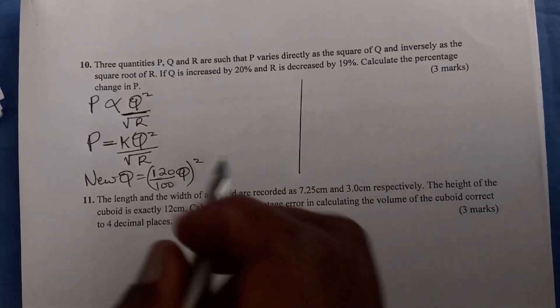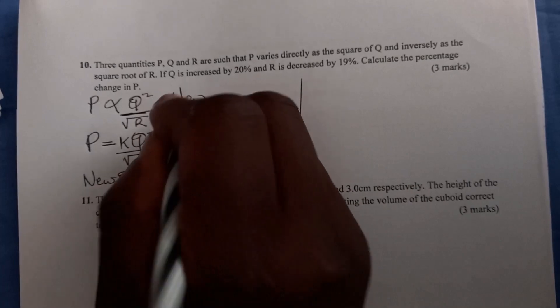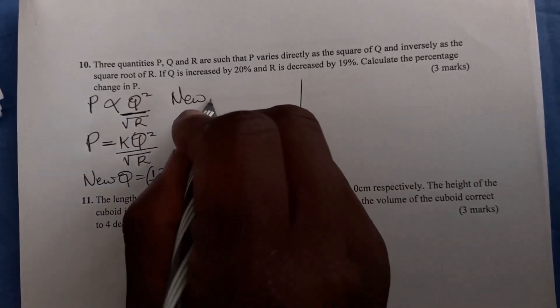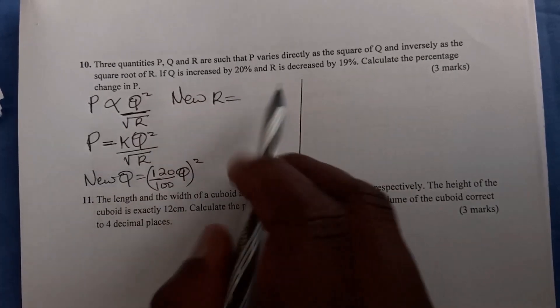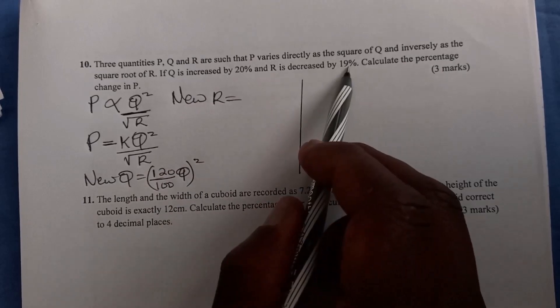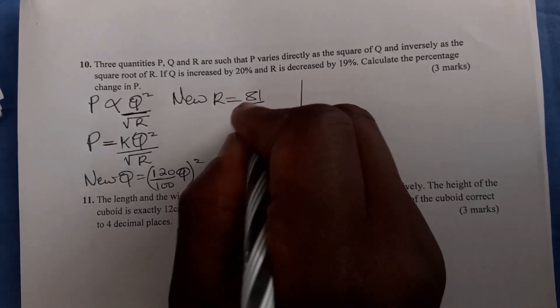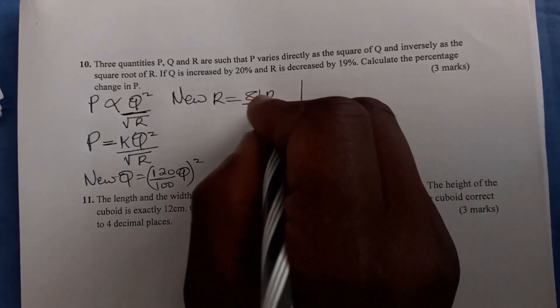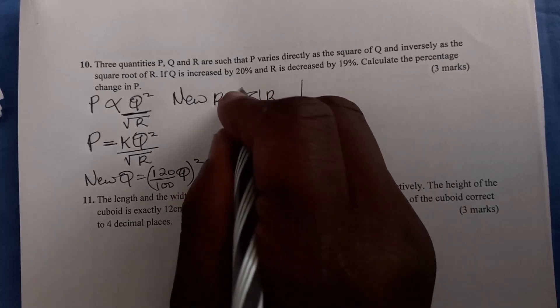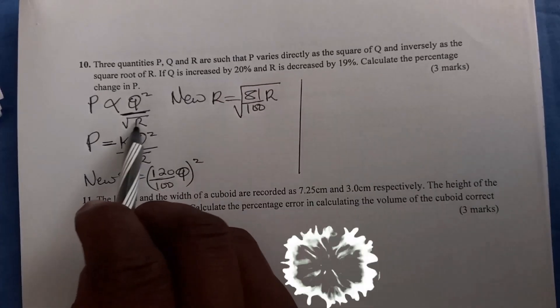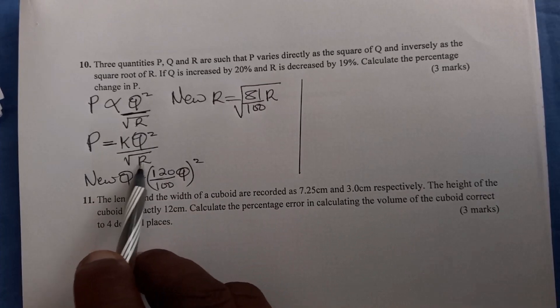R is decreased by 19%, so new R - this one is decreased by 19%, so you take 100%, the original was 100%, subtract 19%, you get 81%. This is 81 over 100 times R, and you have to get the square root since we must get the square root of that.